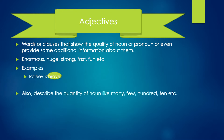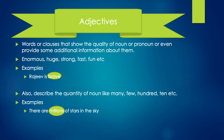Adjectives can also describe the quantity of nouns, like many, few, hundreds, ten, etc. For example, there are millions of stars in the sky. In this sentence, millions describes the quantity of the noun — the stars. Hence, it is an adjective.